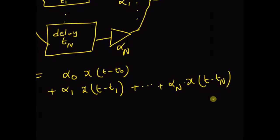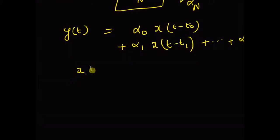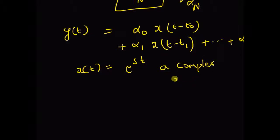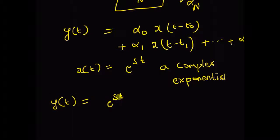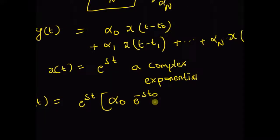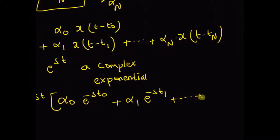In communication, the input is typically an exponential function, that is e^(st), which is a complex exponential. Then the output y(t) can be written as e^(st) multiplied by α₀·e^(−st₀). Similarly, the second term is α₁ multiplied by e^(−st₁), and finally the (n+1)th term is αₙ·e^(−stₙ).